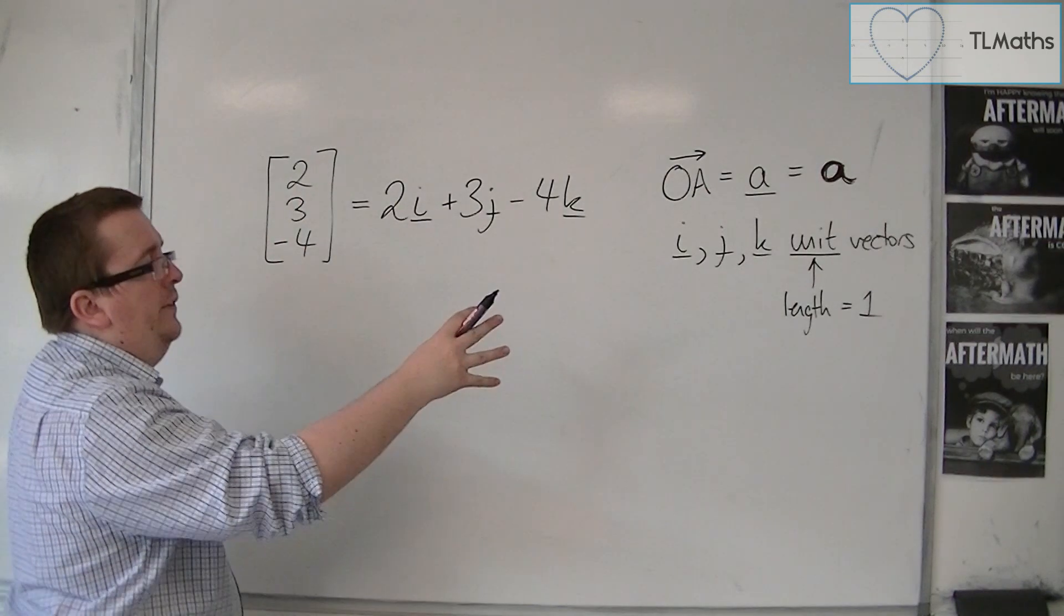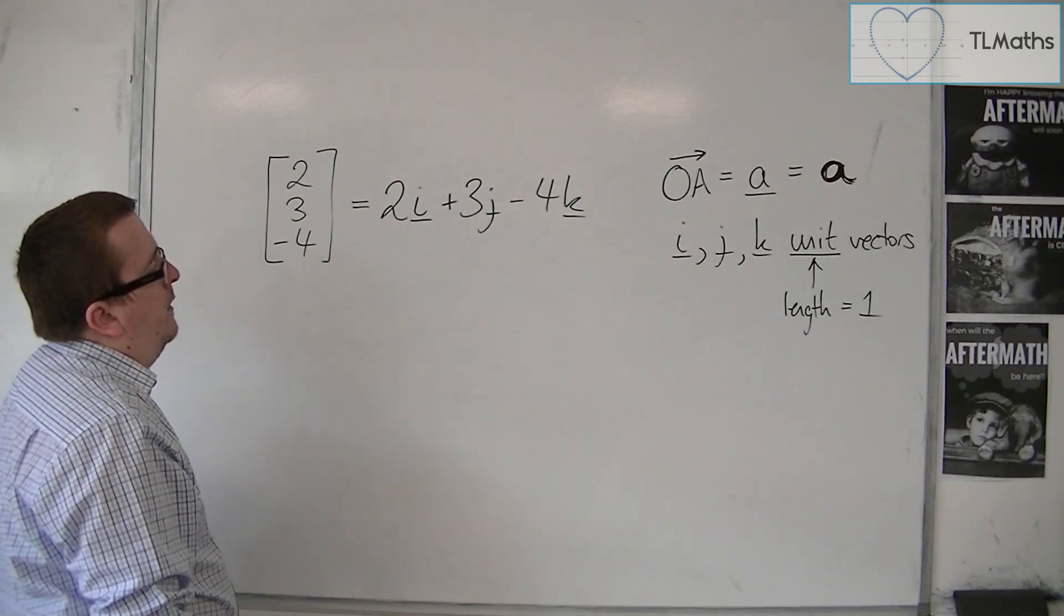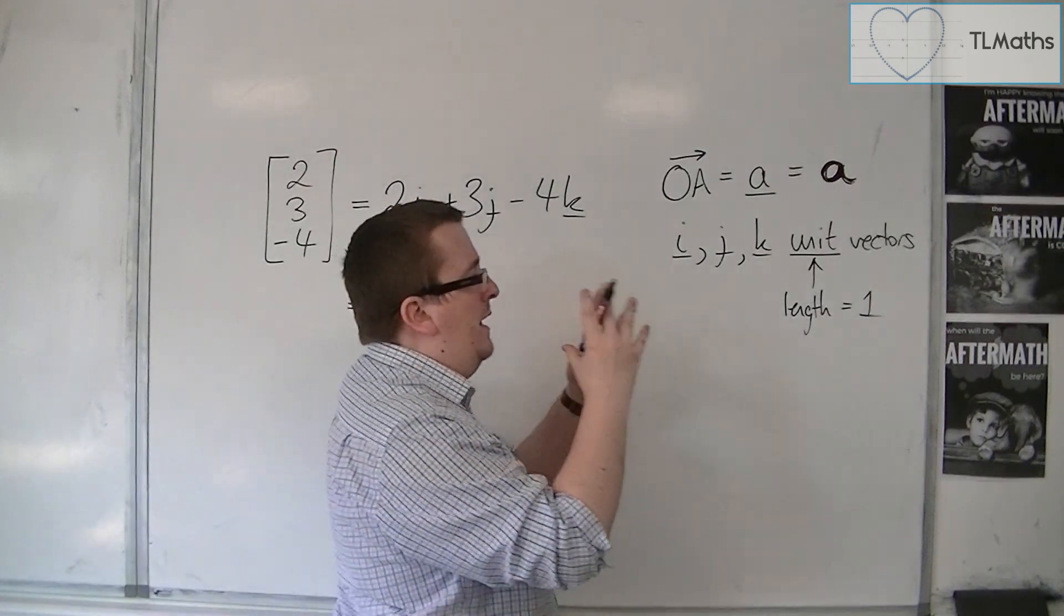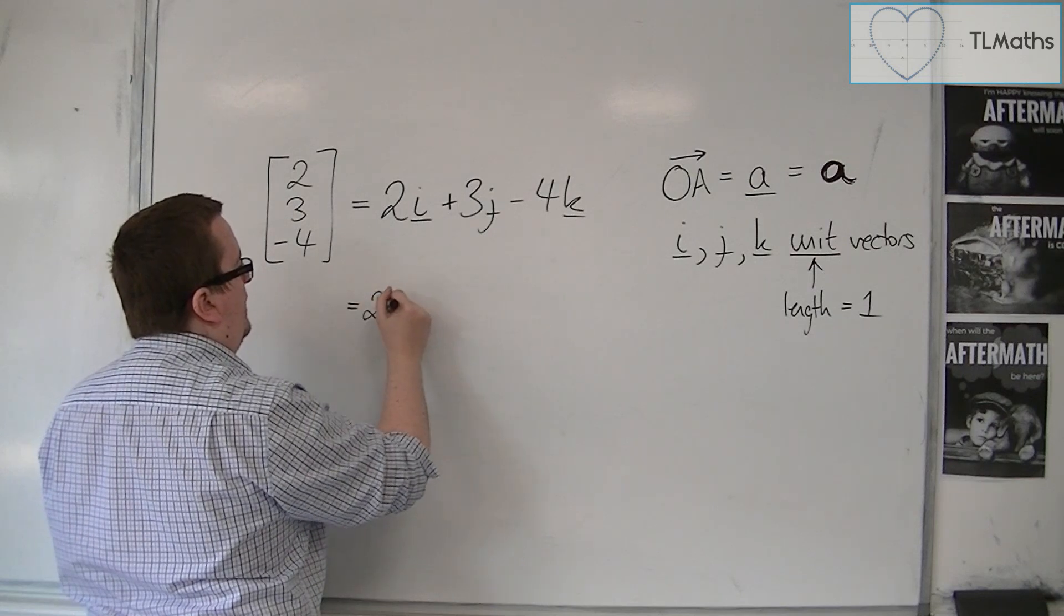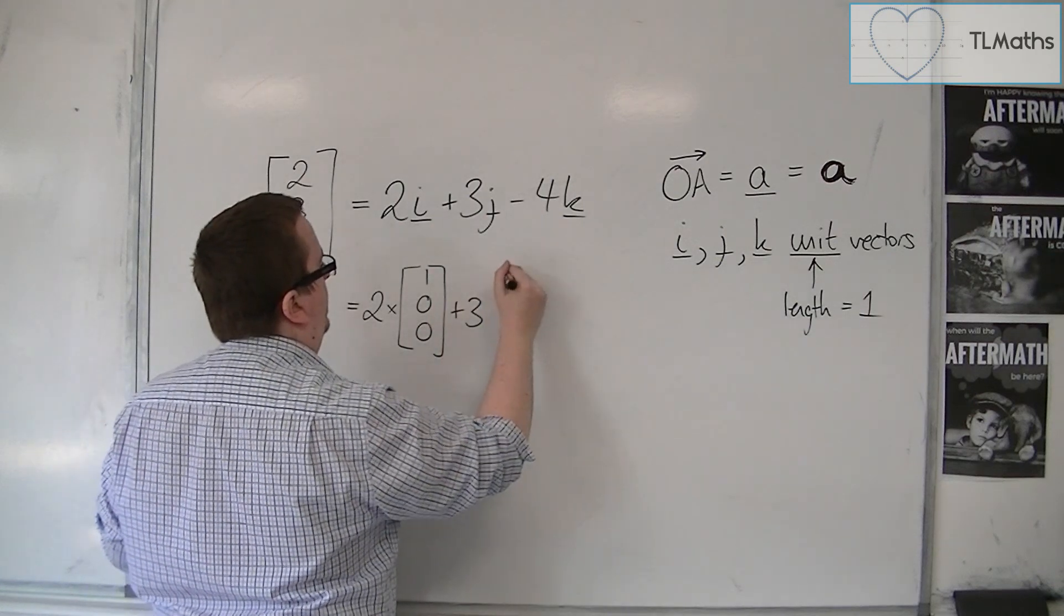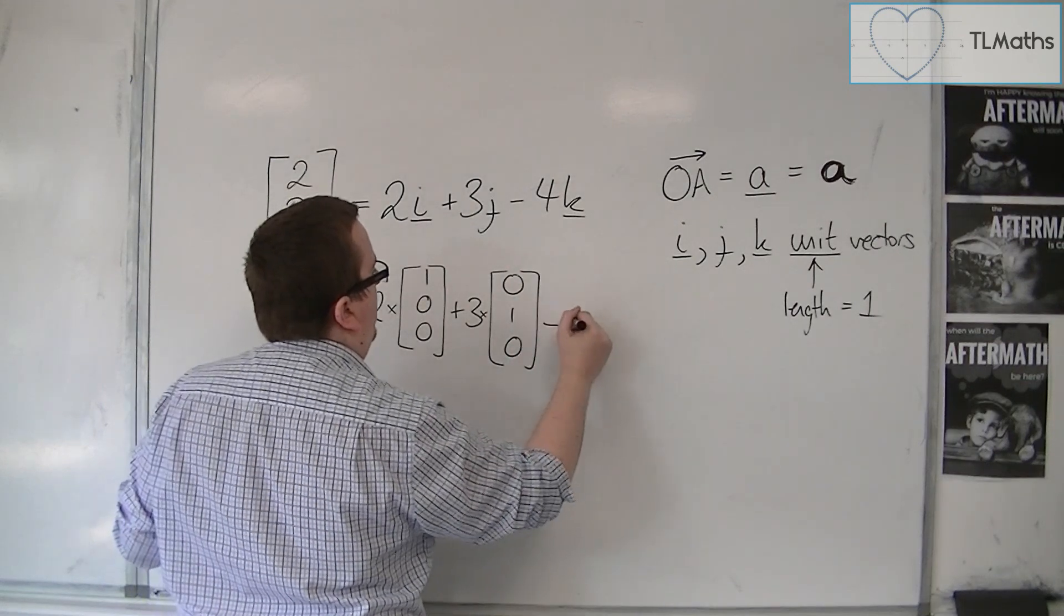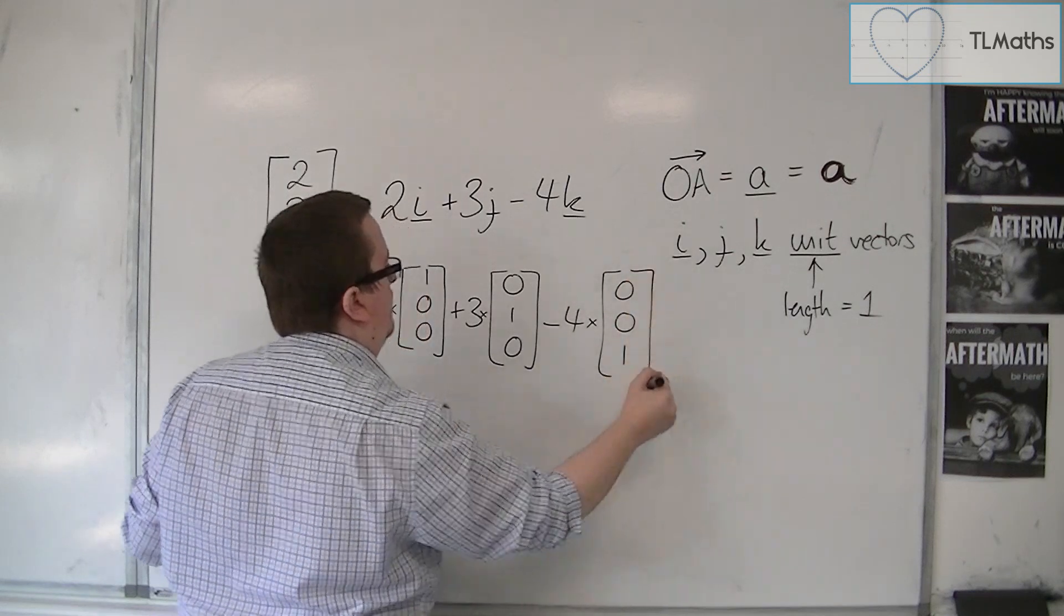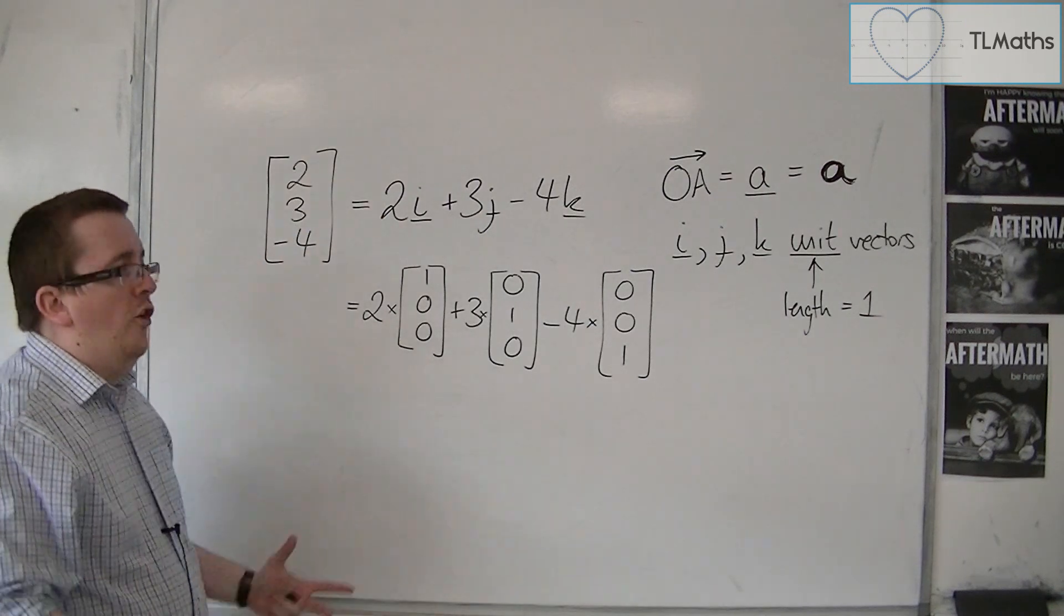These unit vectors, otherwise referred to as base vectors, how they work is that i has the vector (1, 0, 0). So this is effectively 2 lots of the vector (1, 0, 0) plus 3 lots of (0, 1, 0) minus 4 lots of (0, 0, 1). Now, these are just alternative forms of the same thing.